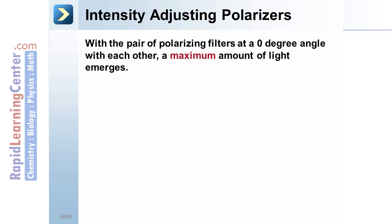Intensity adjusting polarizers. With the pair of polarizing filters at a zero degree angle with each other, in other words, parallel to each other, a maximum amount of light emerges.